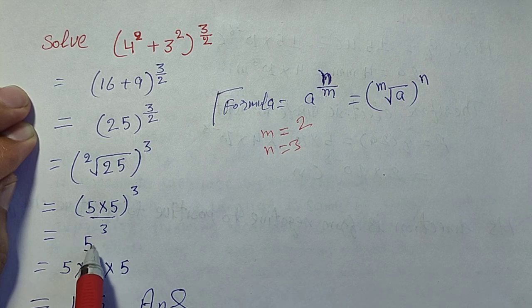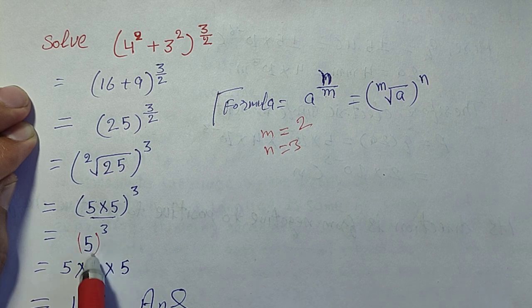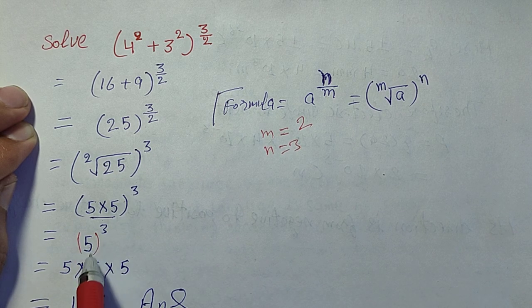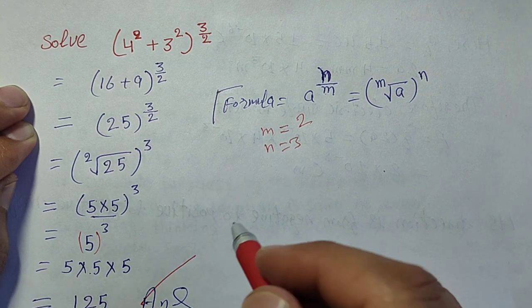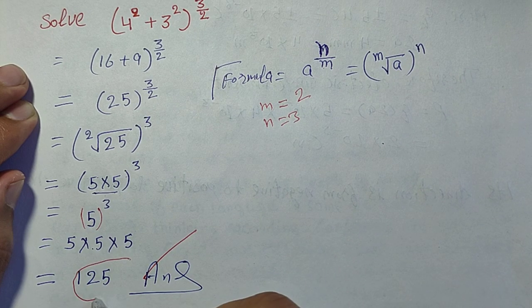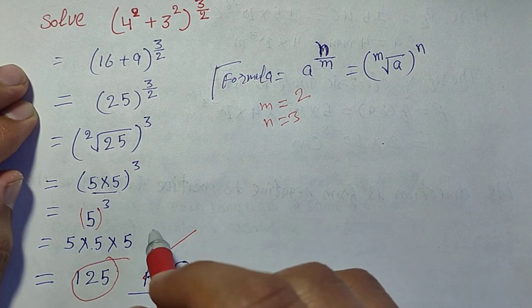Square root of 25 is 5, raised to power 3. That's 5 times 5 times 5, which equals 125. So the answer is 125.